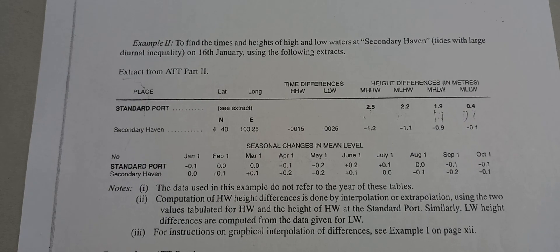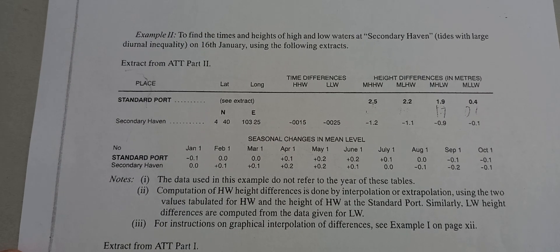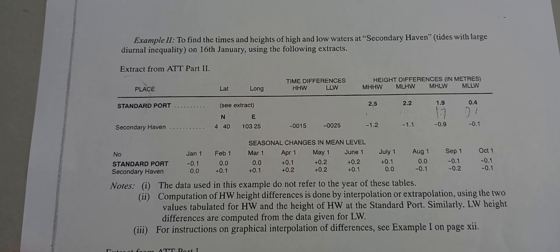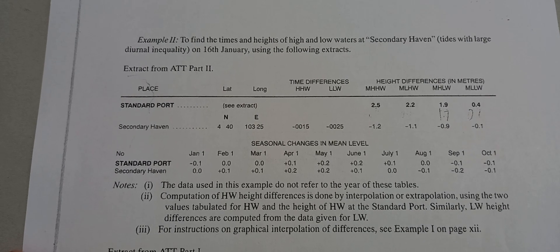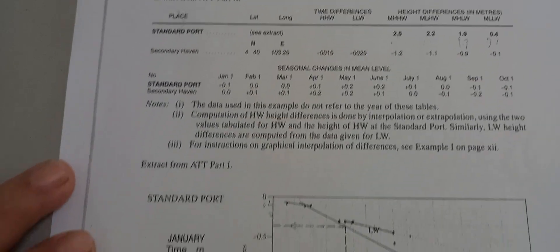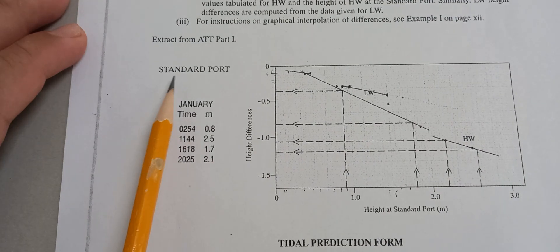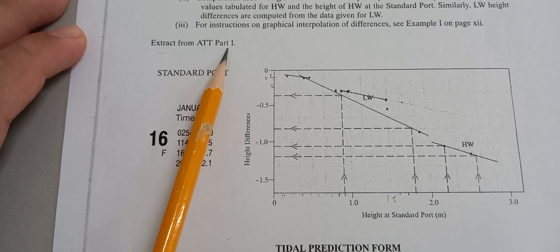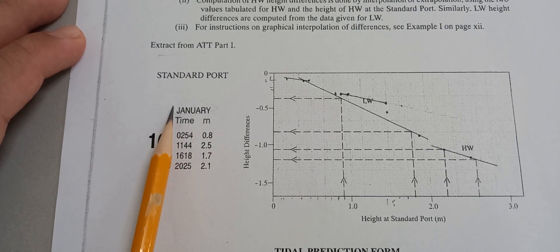Now let's go to the computation. We're going to get the times and heights of high water and low water at the secondary port on January 16. Here is the standard port data, extracted from the Admiralty Tide Tables, Part 1. You need to go to January 16.